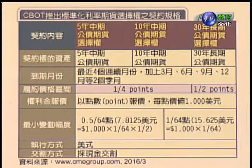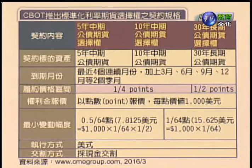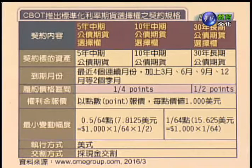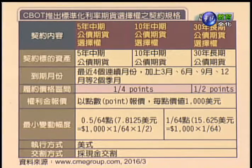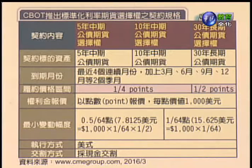接着我们看权利金的报价。每一种契约的权利金报价同样也是以点数来表示，报价的最小升降单位是六十四分之一percent。比如说十年期中期公债的买权履约价格假如是1280，代表128%；权利金的结算价假如是127的话，代表127点；各位记得它每一点是一千块，所以十万乘上六十四分之一百二十七percent，可以得到1984.375美元的权利金。最小变动幅度要看契约合约而定，五年期跟十年期大概是六十四分之零点五点，三十年期是六十四分之一点。最后交割方式一概是现金交割。